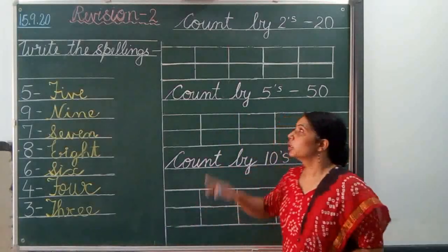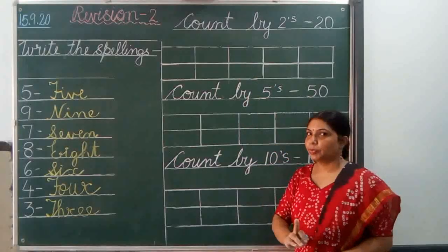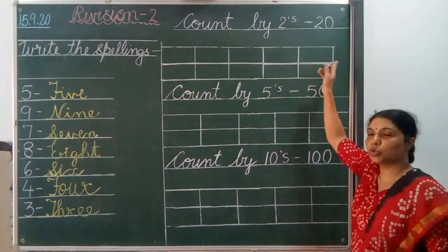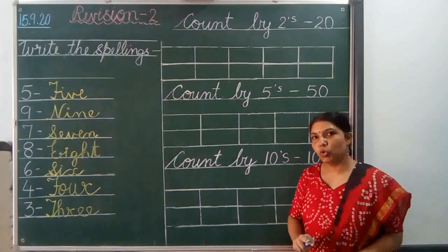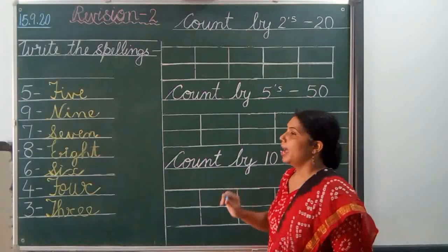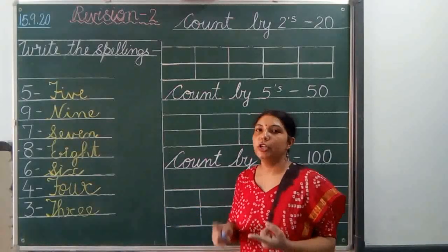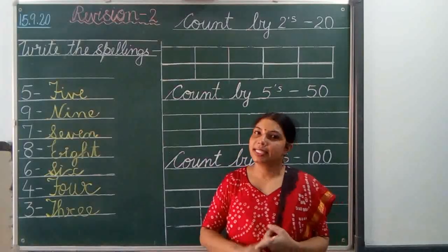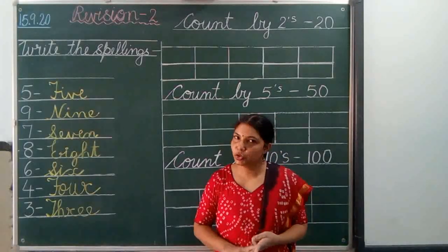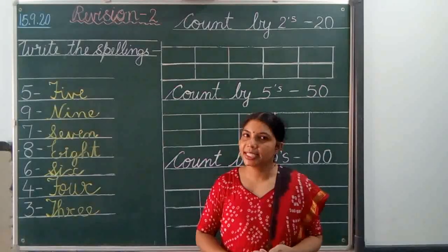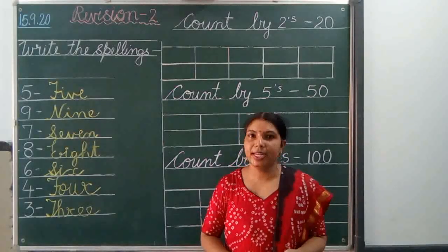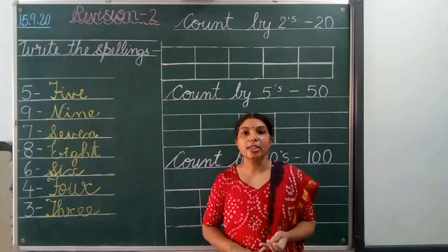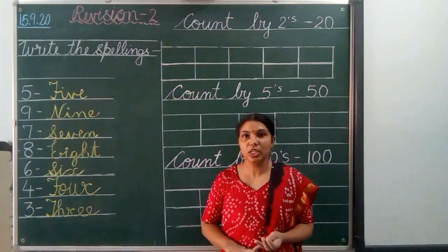Now you have to write down on the next page. You have to write down count by 2's 20. As you know, you have to write 2, 4, 6, 8, 10, 12, 14, 16, 18, and 20. These are called count by 2's 20.